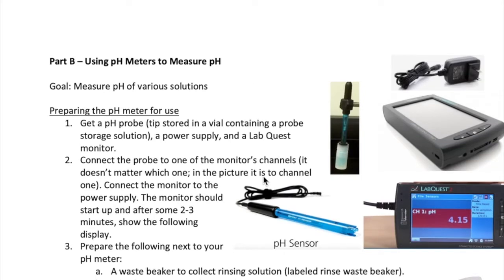In part B, you'll use the pH meter to measure the pH of various solutions. Here, I will describe the components of the pH meter and how to use it. First, you'll get the following three equipment. The pH probe, whose tip is inside a vial containing a storage solution.